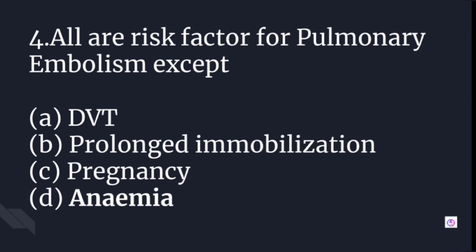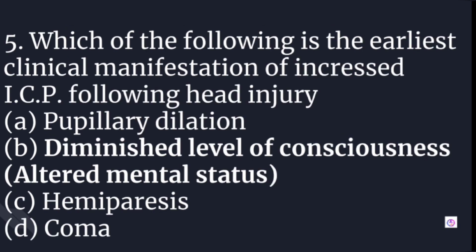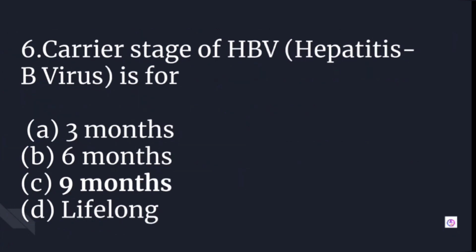All are risk factors of pulmonary embolism except anemia. Which of the following is the earliest clinical manifestation of increased intracranial pressure following head injury? The answer is diminished level of consciousness, i.e., altered mental status. The carrier stage of Hepatitis B virus is for nine months.